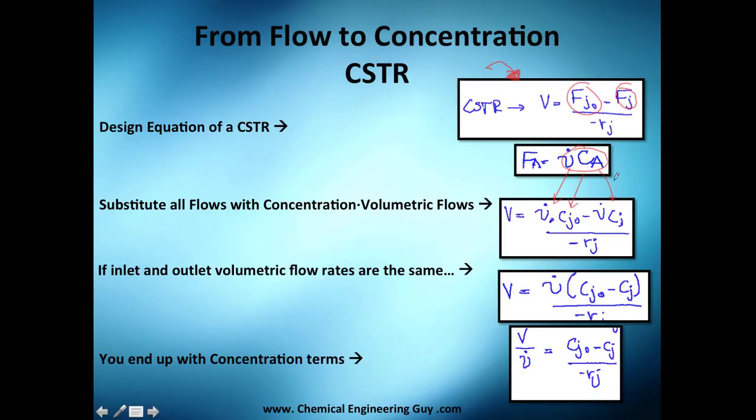And the final volumetric flow times the final concentration. Since the volumetric flow is kept constant, we can take it out and we are left with initial minus final. We can take this over here and we get this equation in concentration terms.